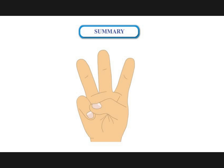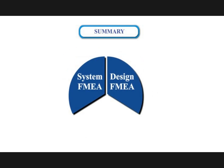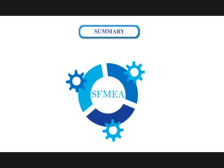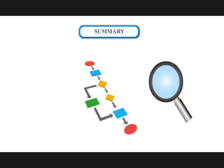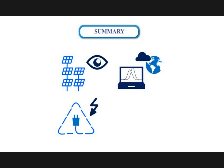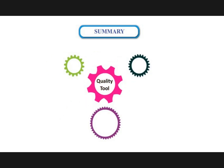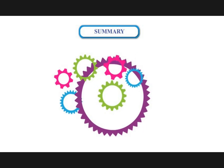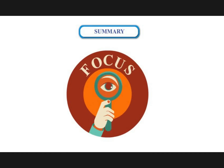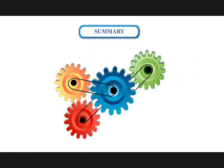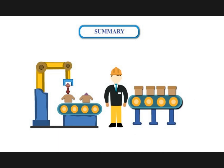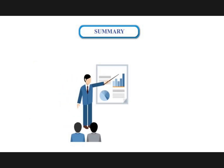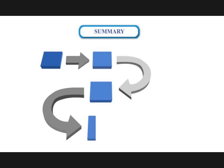There are three main types of FMEA in use today: System FMEA, Design FMEA, and Process FMEA. System FMEA is used to analyze complete systems and/or subsystems during the concept or design stage and is the highest-level analysis. Design FMEA is used to analyze a product design before it is released to manufacturing, focusing at the subsystem or component level. Process FMEA is used to analyze manufacturing and/or assembly processes and is the most commonly used and least complex type.